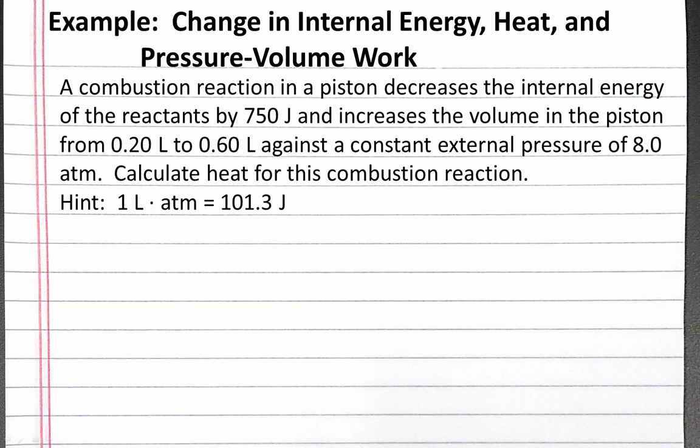Our problem reads: a combustion reaction in a piston decreases the internal energy of the reactants by 750 joules and increases the volume in the piston from 0.2 liters to 0.6 liters against a constant external pressure of 8 atmospheres. Calculate heat for this combustion reaction. And we're given the hint that 1 liter atmosphere equals 101.3 joules.